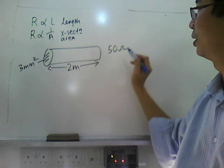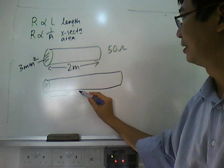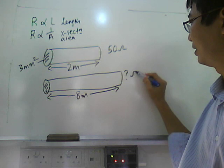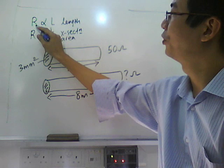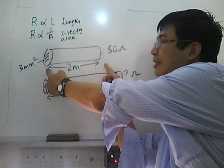Suppose if this is 50 ohm. If we have a wire, the same area but longer, say it is 8 meter long, what is this resistance? If we apply this relationship, resistance is directly proportional to the length. R is directly proportional to L.